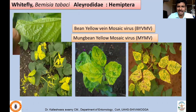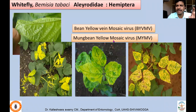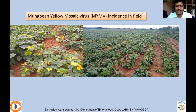Another sucking pest causing both direct and indirect damage is Bemisia tabasi, the whitefly. Like aphids, it secretes large quantities of honeydew, causing sooty mold. Additionally, Bemisia tabaci transmits viral diseases, mainly geminiviruses like Bean Yellow Mosaic Virus (BYVMV). Another closely related virus is Mung Bean Yellow Mosaic Virus (MYMV), which causes different types of symptoms and is exclusively transmitted by whiteflies. You'll notice large numbers of plants infected with mung bean yellow mosaic virus in the field.